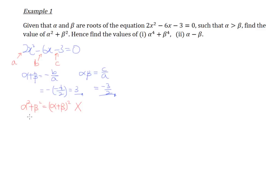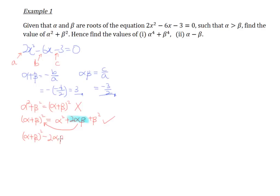Based on basic algebra, alpha plus beta, the whole bracket squared — which is alpha plus beta multiplied by alpha plus beta — is actually equal to alpha squared plus 2 alpha beta plus beta squared. This is the correct formula to remember. If we rearrange, moving the 2 alpha beta to the other side, we get: alpha plus beta bracket squared minus 2 alpha beta equals alpha squared plus beta squared.